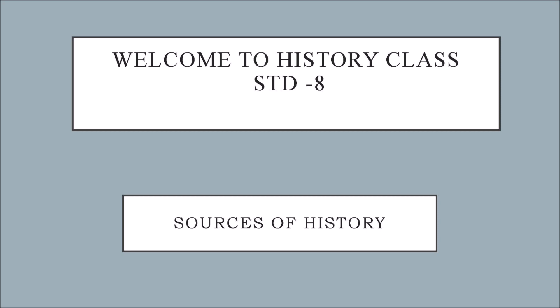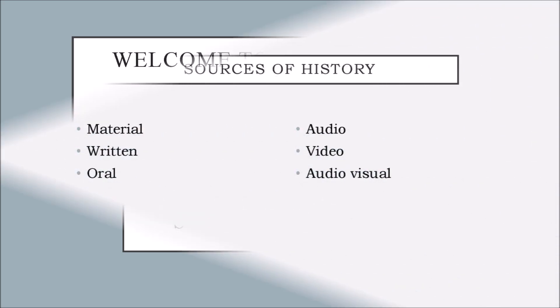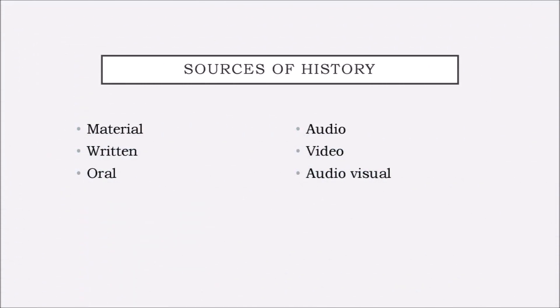This year, we are going to study modern Indian history. The modern Indian history is a period believed as the period of Europeans, especially the British rulers and governance of princely states. We shall see some of the sources of history which are related to it.